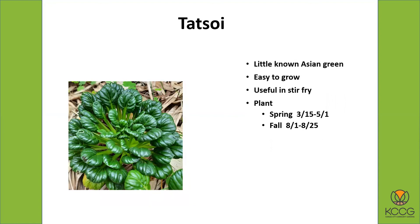Tatsoi is an Asian green. If you look at the tiny miniature leaves, it looks similar to what we talked about with bok choy but smaller with little tiny leaves — good in stir fries and salads. Best when young — you don't want them to get too old and too large, as they'll get hot, spicy, and too mustardy-tasting. Easy to grow. Plant them from seeds in the spring and again in late summer for fall.